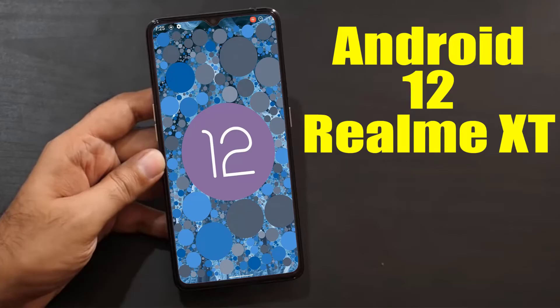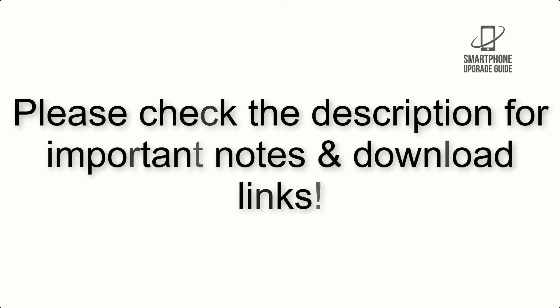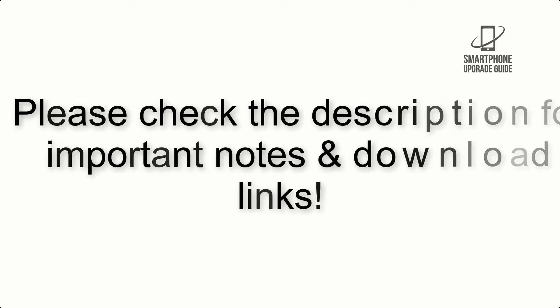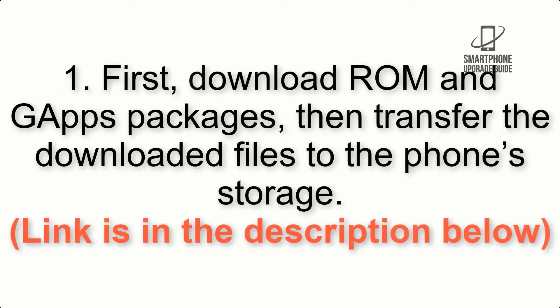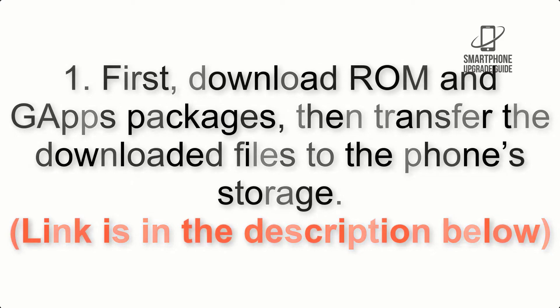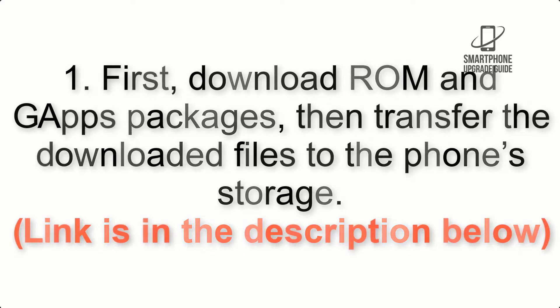Install Android 12 on Realme XT via Lineage OS 19.1. Please check the description for important notes and all the download links. First, download the ROM and GApps packages, then transfer the downloaded files to the phone storage. The link is in the description below.